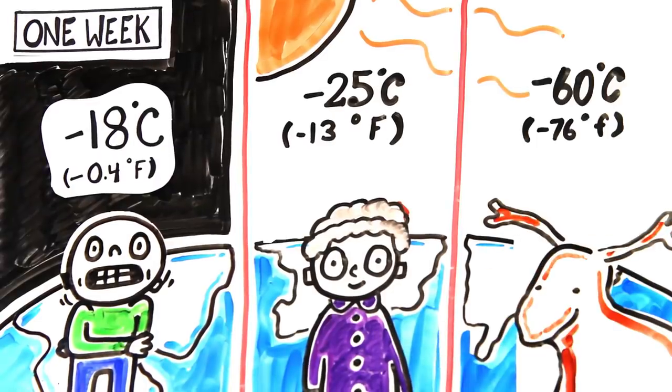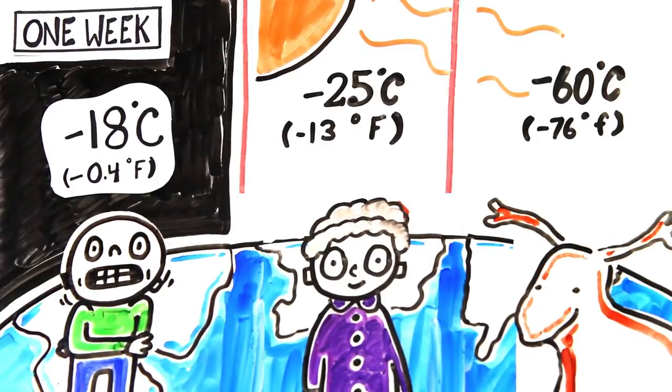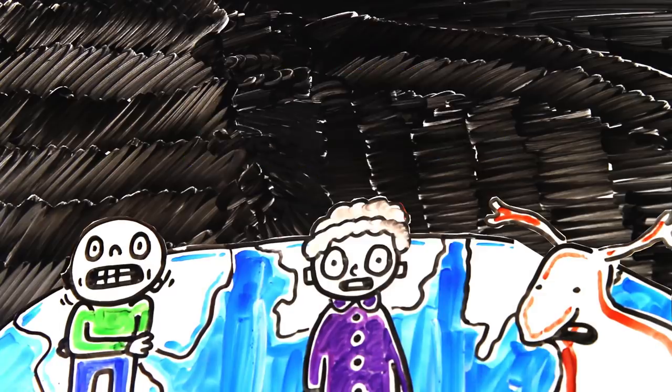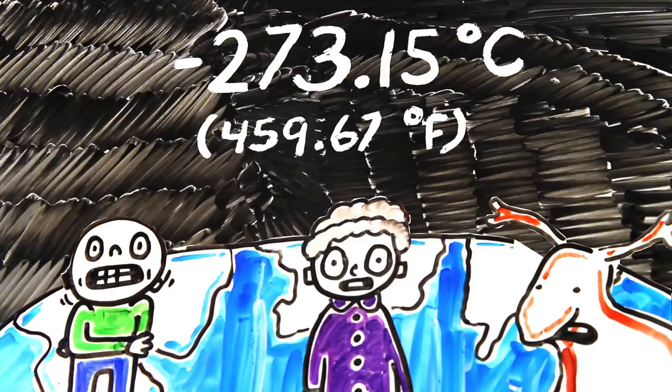And some animals can survive minus 60 degrees Celsius. But the universe is a large and cold place, where the ambient temperature of space is around minus 273 degrees Celsius, meaning it's only going to get colder and colder.